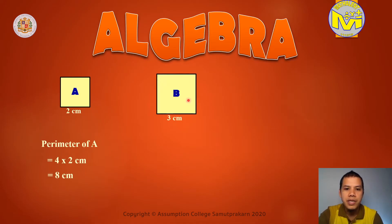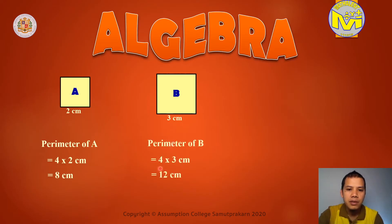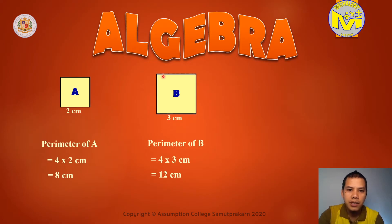Next, Square B. Each side is equivalent to 3 cm. So what is the perimeter of Square B? The same thing. 4 times 3 is equal to 12. 4 sides times 3. Or we can use addition: 3 plus 3 plus 3 plus 3 is equal to 12. The same here: 2 plus 2 plus 2 plus 2 is equal to 8.